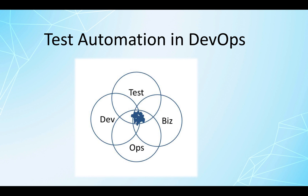Test automation is a key factor in succeeding with continuous delivery, getting these small, frequent changes deployed to production. We can also use automated tools to help us learn in production how our customers are using our product and identify problems there as well.